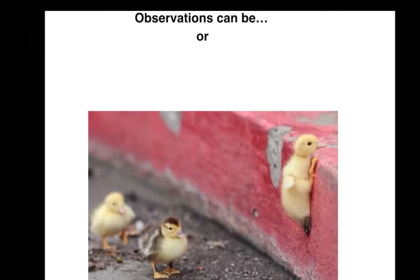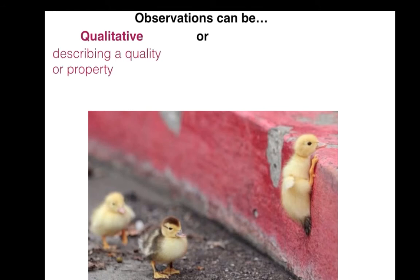Here's an image with three little ducklings climbing what looks like a curb to a sidewalk. When you make observations, they can be qualitative observations, which is describing a quality or property. So the ducks are yellow, or the ducks are cute or soft — all of those are qualities. Qualities are things that you do not measure.